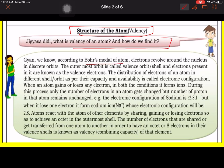As per the Bohr model of an atom, electrons revolve around the nucleus in discrete orbits. Bohr said that electrons are moving in different orbits. The outermost orbit is called the valence orbit.